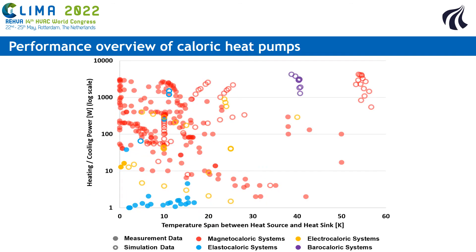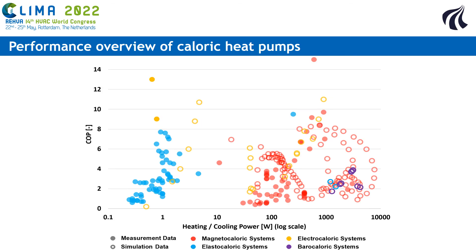On this figure, you can see the heating or cooling power of a system as a function of its temperature span, and one can see that only the prototypes of magnetocaloric heat pump systems can actually have heating power that are compatible with building applications. On this slide, you can see the COP of the devices as a function of heating or cooling power, and similarly, only the current magnetocaloric heat pump prototypes have a heating or cooling power that is compatible with building applications.